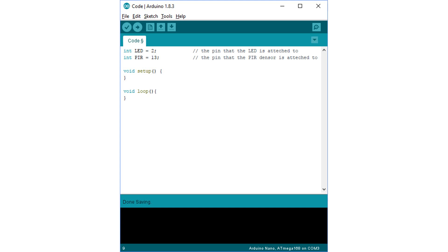The code is very simple. Start by defining the pin number 2 and 13 as LED pin and PIR pin respectively. Then we need to define the pin modes, LED pin to be the output pin and PIR pin to be the input pin.